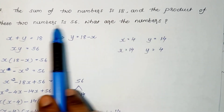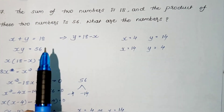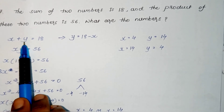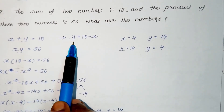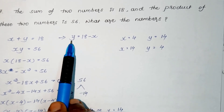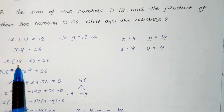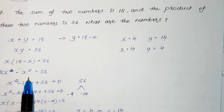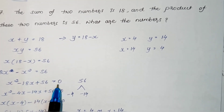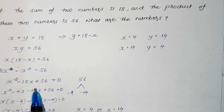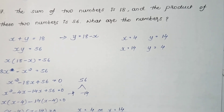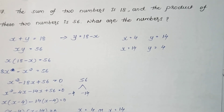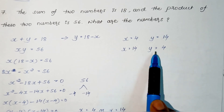The sum of two numbers is 18 and their product is 56; find the numbers. Let the two numbers be x and y, so x + y = 18 and xy = 56. Substituting y = 18 − x gives x(18 − x) = 56, which becomes x² − 18x + 56 = 0. Splitting: x² − 4x − 14x + 56 = 0 gives x = 4 or x = 14. Therefore the two numbers are 4 and 14.